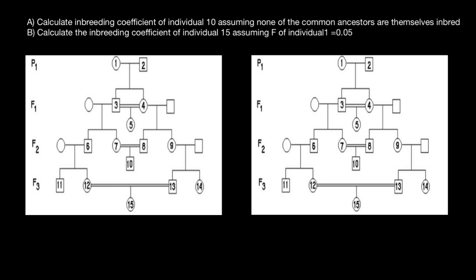So here's the first question: calculate the inbreeding coefficient of individual 10, assuming none of the common ancestors are themselves inbred. Here is individual number 10, for whom we are going to find what is the inbreeding coefficient.